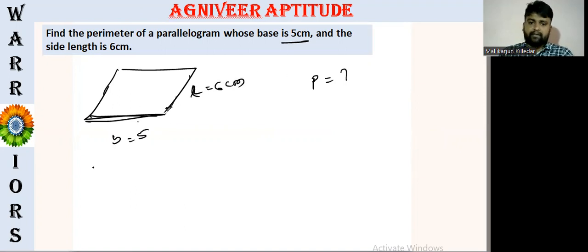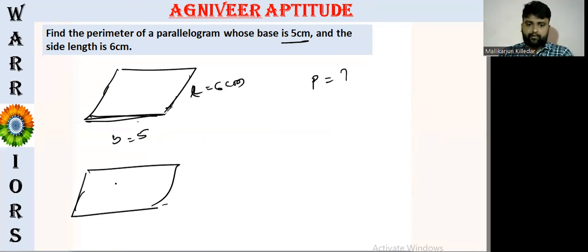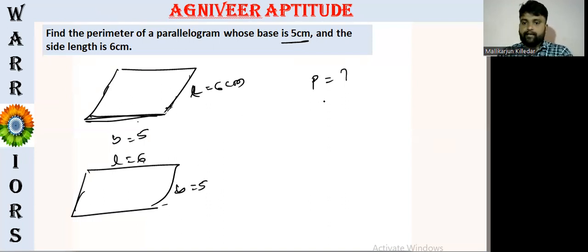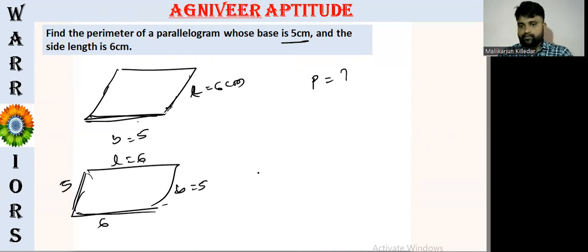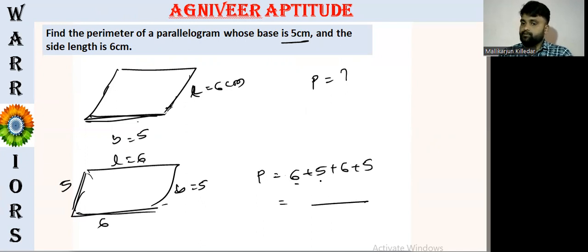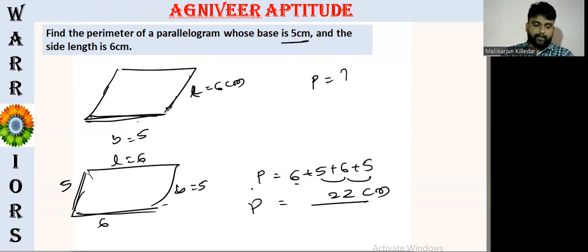So if you don't have any length, you will be able to do this. L is equal to 6 cm, B is equal to 5 cm. So now we have the perimeter. So you have to do this length. 6 is equal to 5.